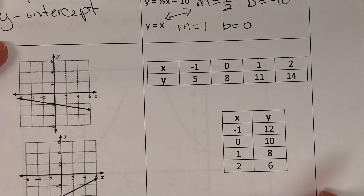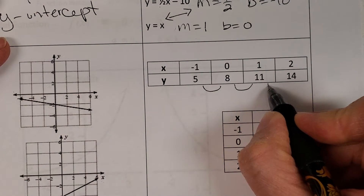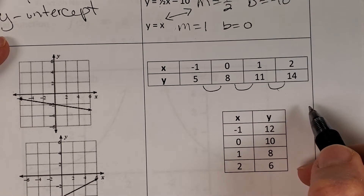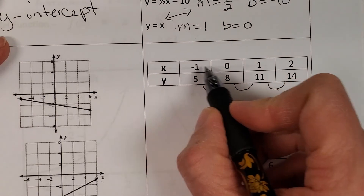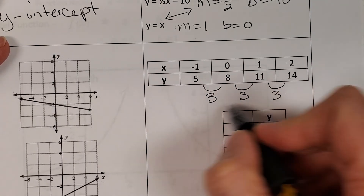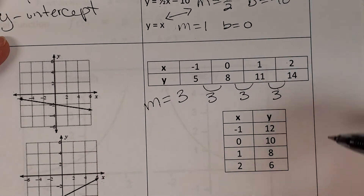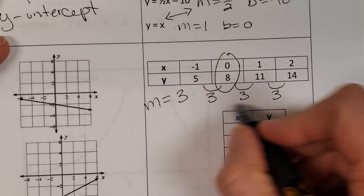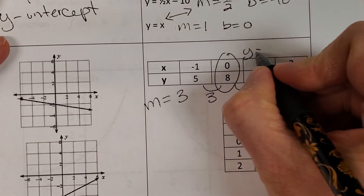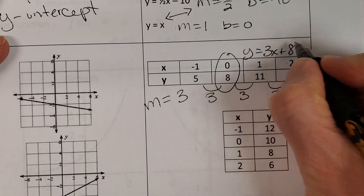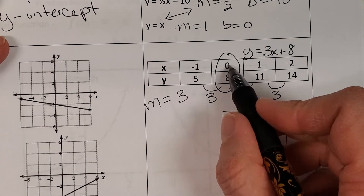From a table, you recognize a linear function by what is being added each time. If you have a consistent number being added to each value, you know it's linear. Here the x-values go up by ones and the y-values go up by threes, which tells us the slope is 3. To find the y-intercept, you look for x equals 0 — here that gives us y equals 8, so our y-intercept is 8.